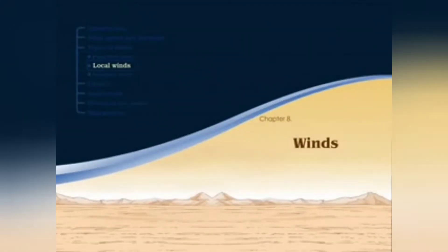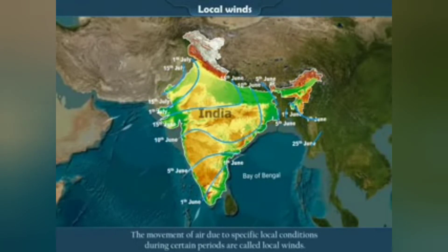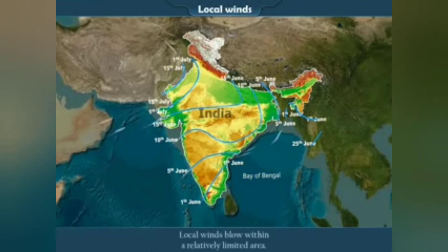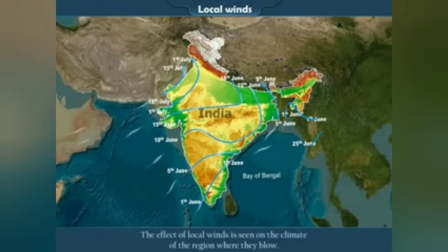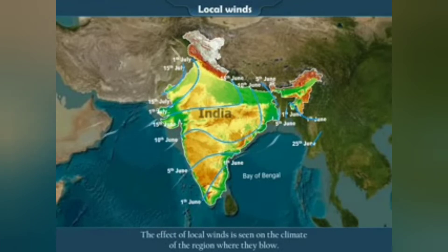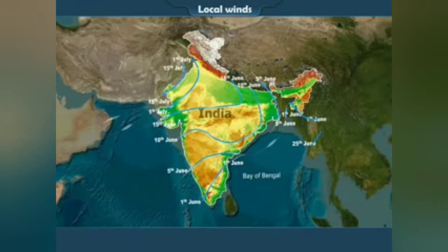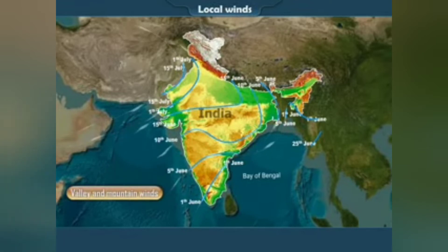Local winds: The movement of air due to specific local conditions during certain periods are called local winds. Local winds blow within a relatively limited area. The effect of local winds is seen on the climate of the region where they blow. These winds are known by various names. The two main types are a) Valley and Mountain winds, and b) Land and Sea breeze.